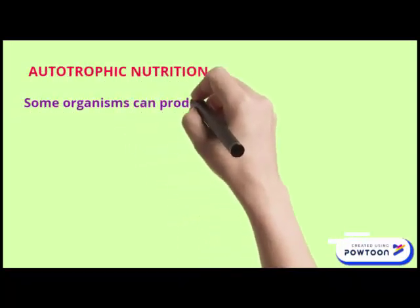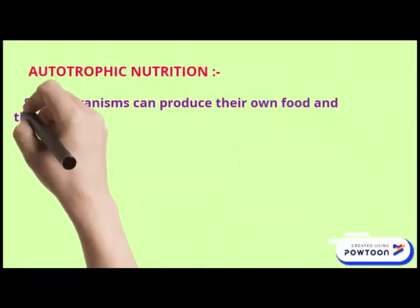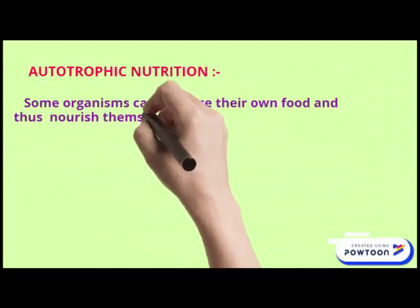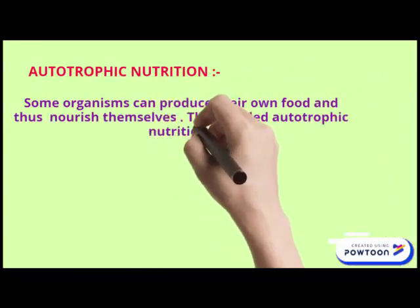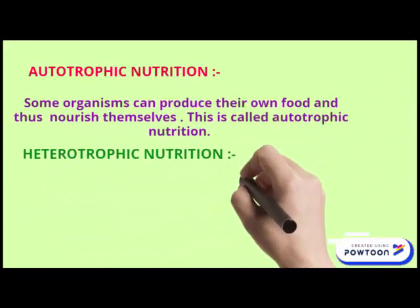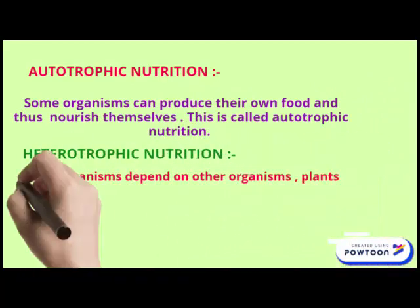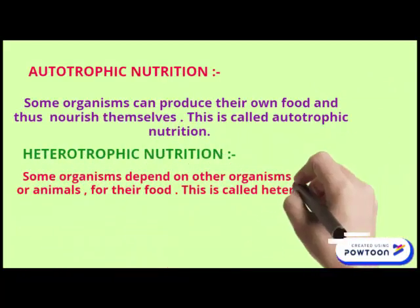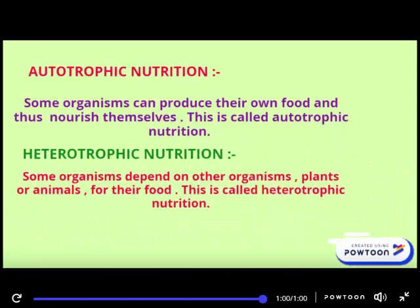Some organisms can produce their own food and thus nourish themselves. This is called autotrophic nutrition. Some organisms depend on other organisms, plants or animals, for their food. This is called heterotrophic nutrition.